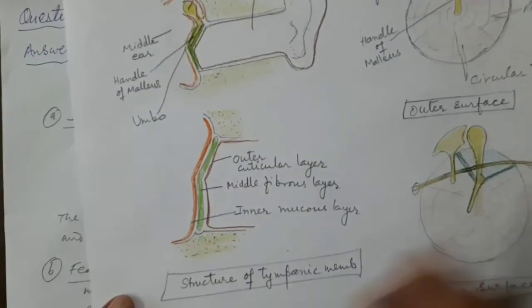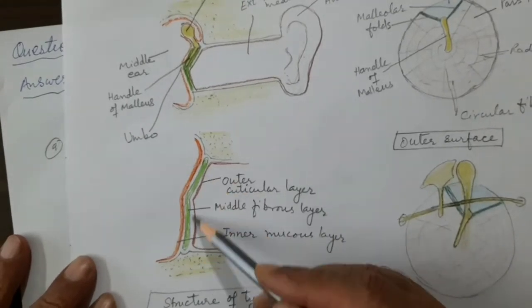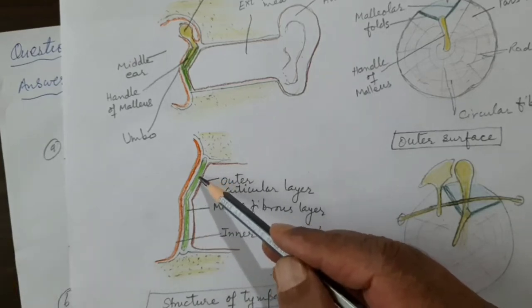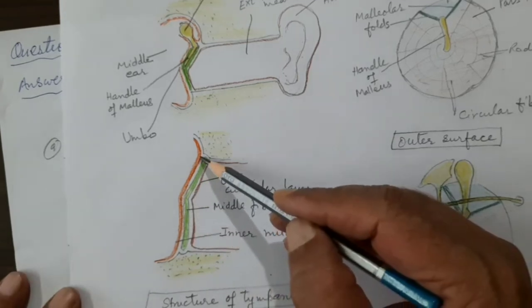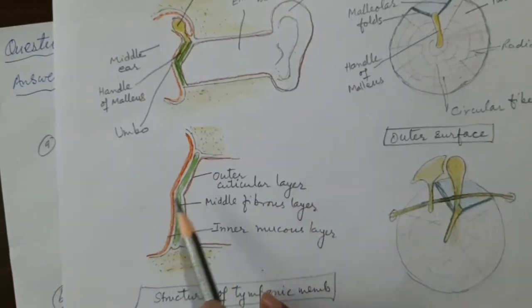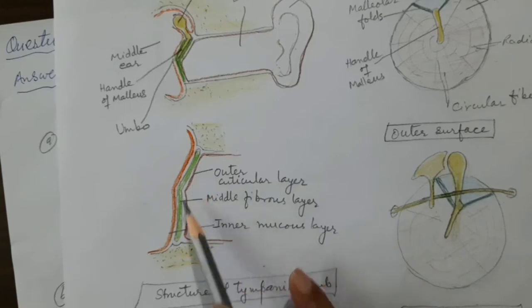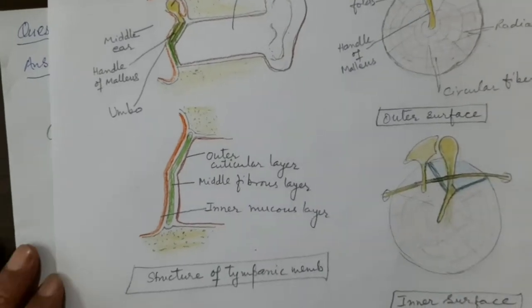The outer, middle, and inner layers are derived from the ectoderm, mesoderm, and endoderm respectively — the three germinal layers of the developing embryo. The skin is derived from the ectoderm, the fibrous layer from the embryonic mesoderm, and the inner layer from the endoderm. So these three embryonic layers are represented in the three layers of the tympanic membrane.